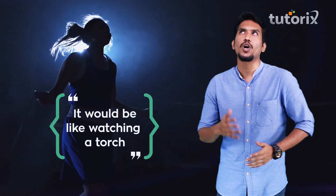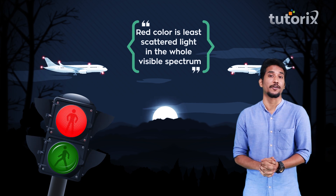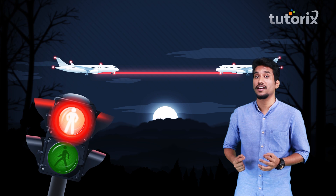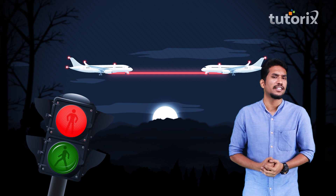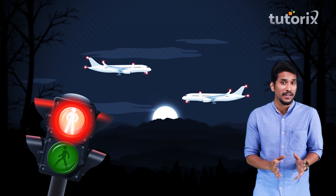Without atmosphere it would be like watching a torch in a dark room. Now, you might have observed that people use red color for danger signals. This is because red color is the least scattered light in the whole visible spectrum. Whatever red color you see here is also visible in the same color at a very long distance. So if you want to caution people who are about to be in an accident, this color is most useful because it appears in the same shade even at a very far distance.